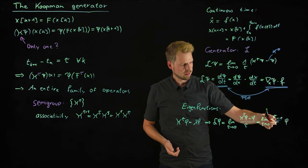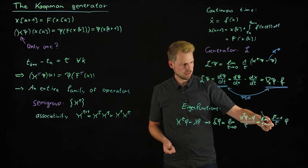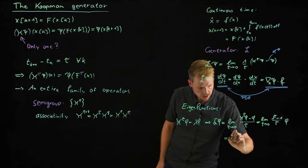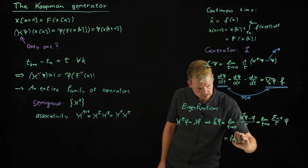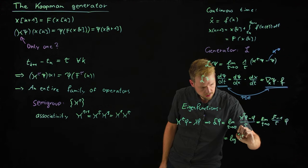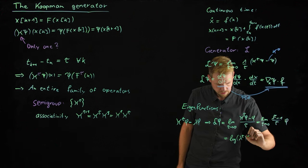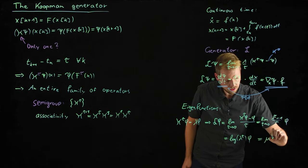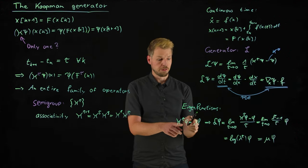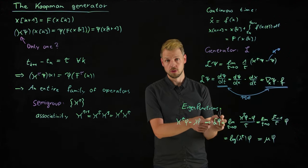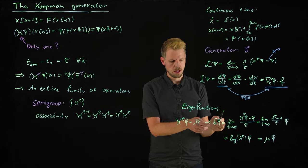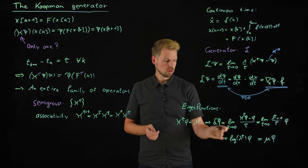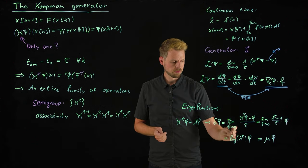So what we get is lambda_tau minus one by tau phi. And what you can then see is that if you take this limit, then what you get is really the logarithm of this eigenvalue. So log lambda_tau phi, and this is just giving it a new name, mu phi. So what we see is, eigenfunctions of the Koopman operator are also eigenfunctions of the Koopman generator, or vice versa. So it doesn't matter which one we use for approximation, and the eigenvalues are also linked using the logarithm.